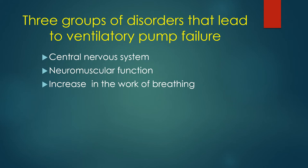Causes of ventilatory pump failure fall into three categories. First, a problem with the central nervous system — a patient with serious head injury from a motor vehicle accident may have an impaired respiratory center, so there's no signal telling the nerves and muscles to pump air. Brain lesions, tumors, abscesses, or injuries can do this. A very common cause is depressant drugs — especially opioids — that cause depression of the drive to breathe, causing CO2 to rise.